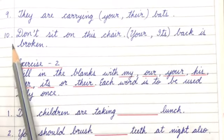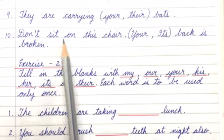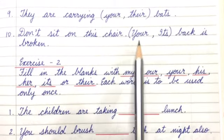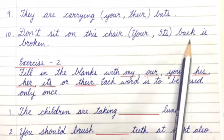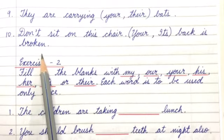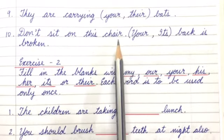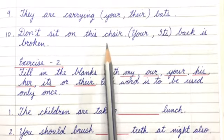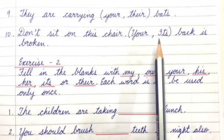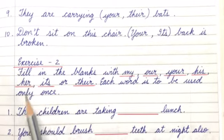Number 10: Don't sit on this chair. Its back is broken. Here, children, we are talking about the chair, so tick mark 'its'.